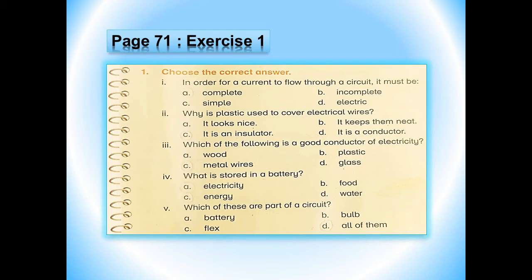Number 4 is: what is stored in a battery? A. Electricity, B. Food, C. Energy, D. Water. The correct option is C: energy. Number 5, the last one, is: which of these are parts of a circuit? A. Battery, B. Bulb, C. Flex, D. All of them. Yes — battery, bulb and flex are all parts of a circuit, so we will circle option D: all of them. Our exercise number 1 is completed.